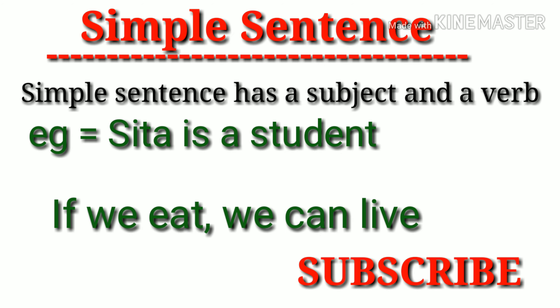So 'if we eat' is dependent on what? On 'we can live'. So 'we can live' is an independent sentence and 'if we eat' is a dependent sentence. This is how you should understand dependent and independent clauses.